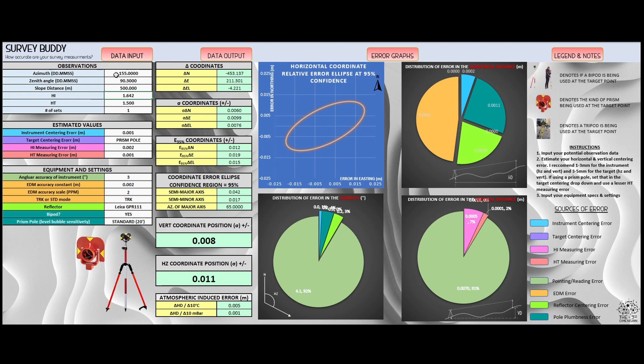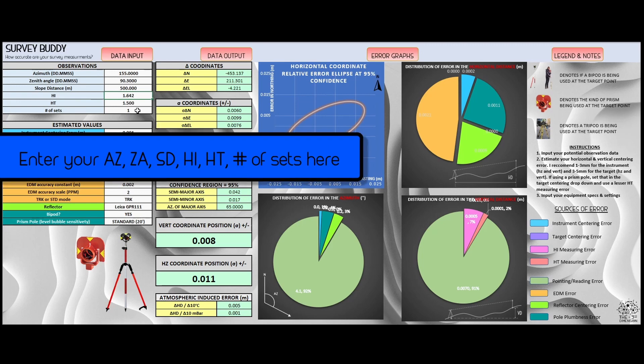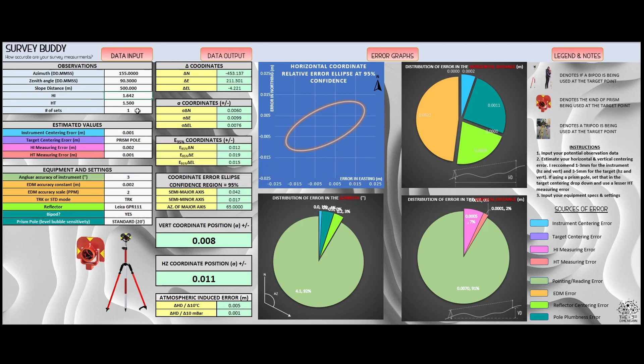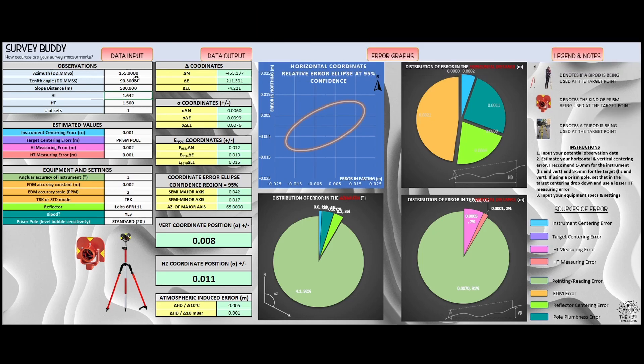So how to use it? This first box is for entering in your survey observations: the azimuth to the target point, the zenith angle, the slope distance, your height of instrument, your height of target, and the number of sets you're going to make to that point. Your azimuth isn't going to make any difference in magnitude of your error, just direction. And neither will your height of instrument. The rest will affect the magnitude and direction of your error.